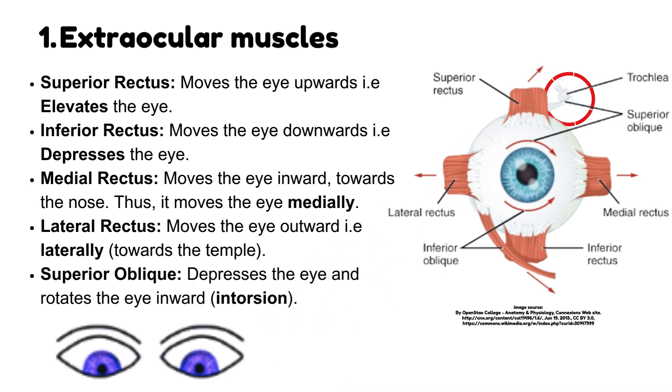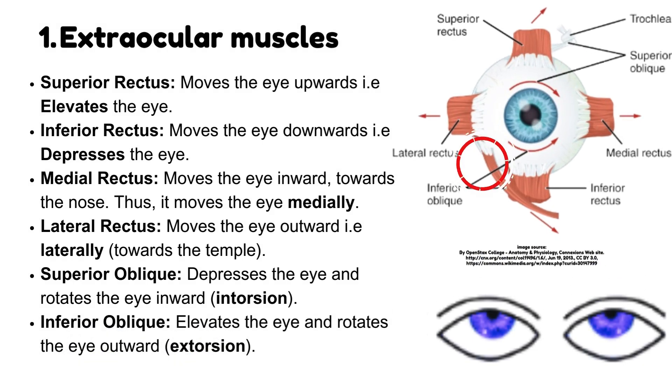Superior oblique depresses the eye and rotates the eye inward in torsion. Inferior oblique elevates the eye and rotates the eye outward in torsion.